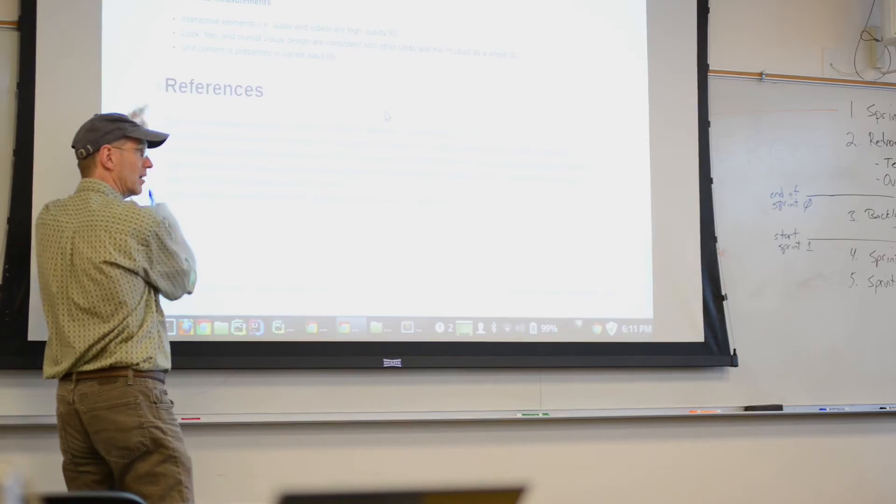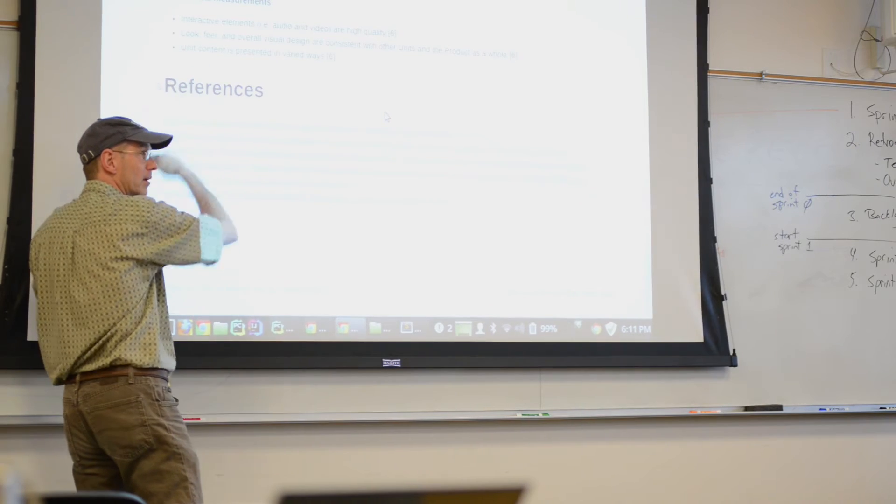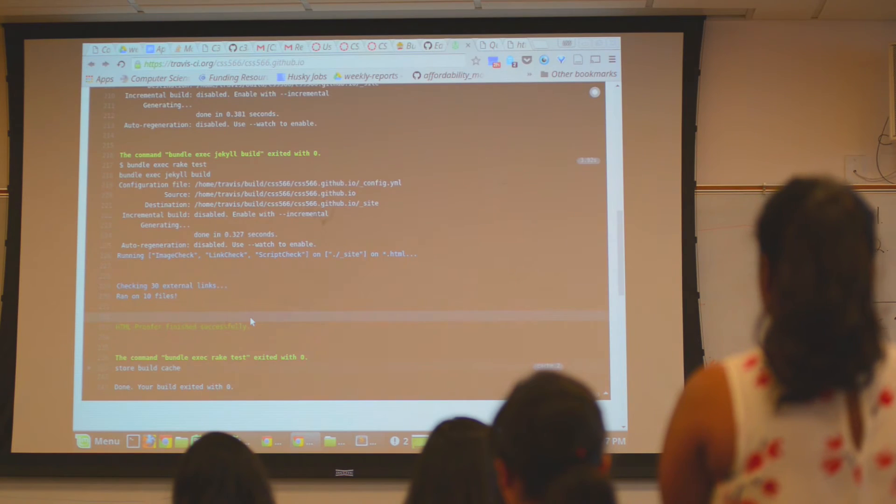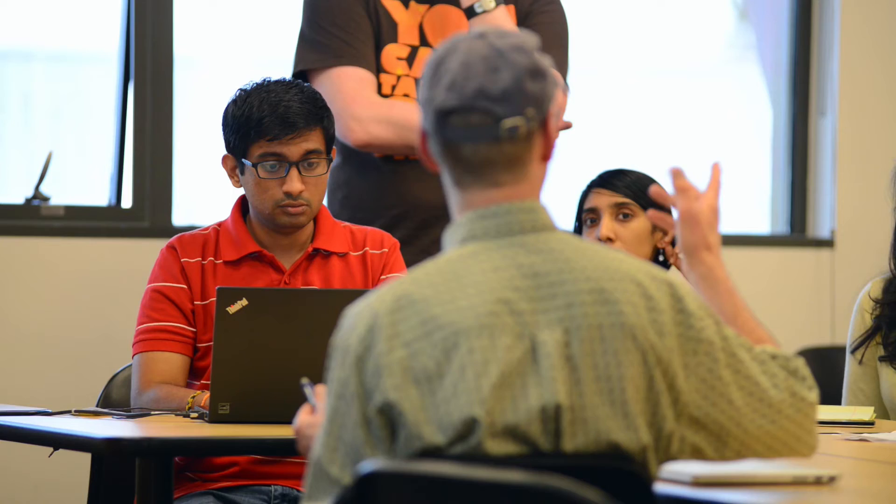For full-time students, they're able to complete it in about five quarters. If they're working in a company and are part-time students, then it usually takes them about two to two and a half years to complete the program. Many of our courses, if not most, are evening classes, so it really caters to the professionals who wish to pursue an advanced degree.